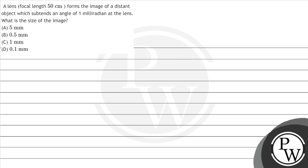Hello, let's read the question. The question says a lens, focal length 50 cm, forms the image of a distant object which subtends an angle of 1 milliradian at the lens.